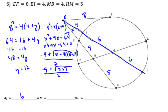There are no perfect squares that go into 337, so it's actually simplified as negative 9 plus square root of 337, all over 2. And again, it wouldn't be minus square root of 337 because that would give you a negative value, which isn't possible.